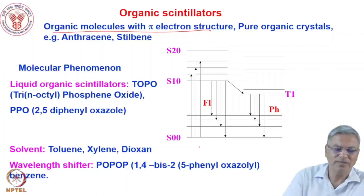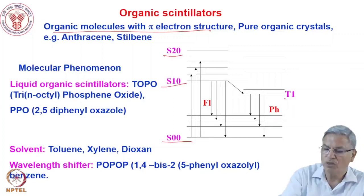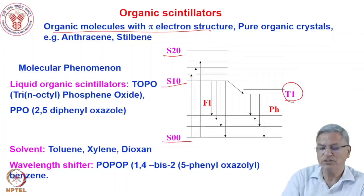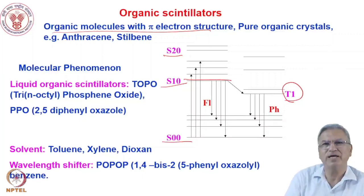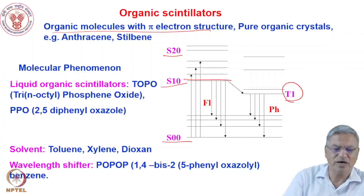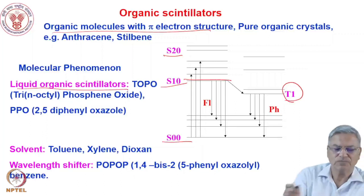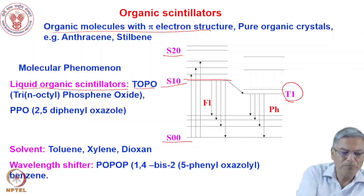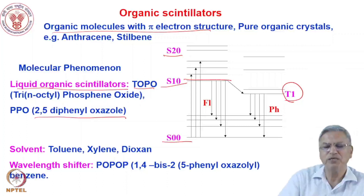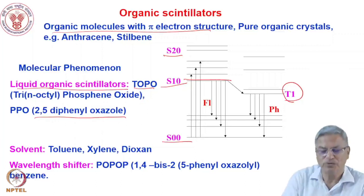This is the typical diagram for a fluorescing molecule — the singlet state, ground state, excited states. You can also have a triplet state which undergoes phosphorescence, while the singlet excited state undergoes fluorescence. Several molecules undergo fluorescence when ionized or excited. The typical ones used for radiation detection are liquid organic scintillators like TOPO (tri-N-octyl-phosphine oxide) or PPO (2,5-diphenyloxazole). Conjugated double bonds in the pi-electronic structure give these molecules their fluorescent nature.